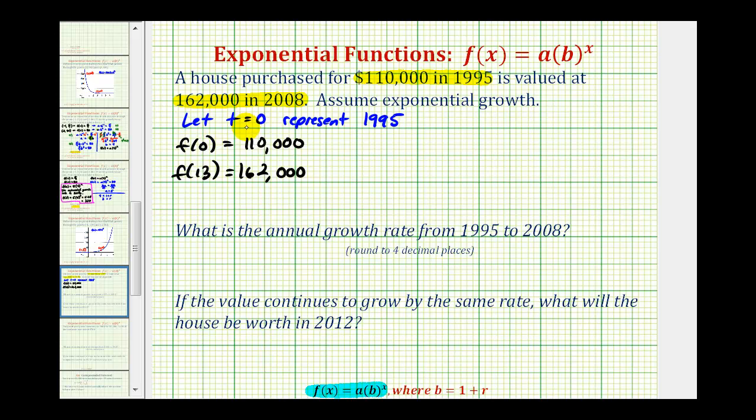And now for our function, since we're using the variable t for time, f(t) must be equal to the initial value, or $110,000, times b raised to the power of t. Notice that when t is equal to zero, the function value would be $110,000 because b to the zero is equal to one. And now we can use the second function value to determine the value of b. If f(13) is equal to $162,000, then f(13) would be equal to $110,000 times b to the 13th, which must equal $162,000.